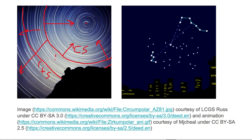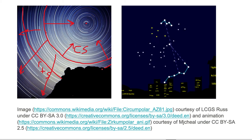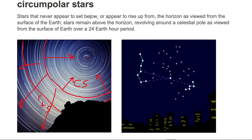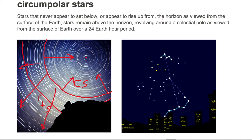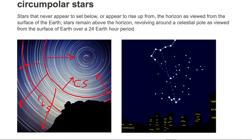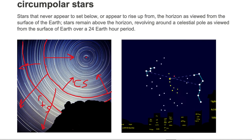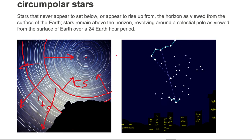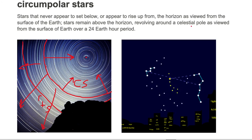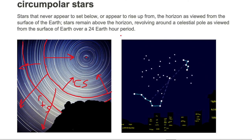These are the ones that appear to go into the ground and come up from the ground. So circumpolar stars are stars that never appear to set below or appear to rise up from the horizon as viewed from the surface of Earth. These stars remain above the horizon, revolving around a celestial pole as viewed from the surface of the Earth over a 24-hour Earth period.